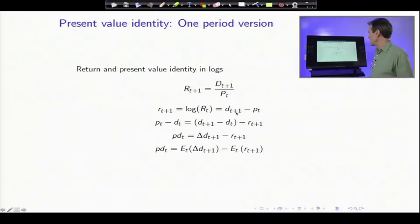Next I rearrange. So I turn this into a present value identity. That's the return identity, it's already linear. I turn it into a present value identity by bringing the p to the left, subtracting d from both sides. pd is what I call p minus d to save some space. And we've got the price dividend ratio is tomorrow's dividend growth minus tomorrow's return.